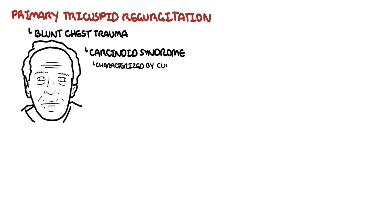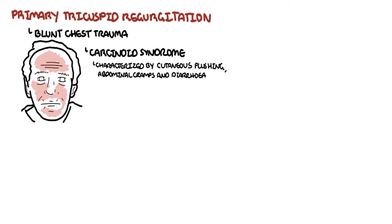Characteristic features of carcinoid syndrome include cutaneous flushing, abdominal cramps, and diarrhea. Drugs are also a cause — there is an association between tricuspid regurgitation and the combined use of anorectic drugs such as ergotamine or fenteramine.